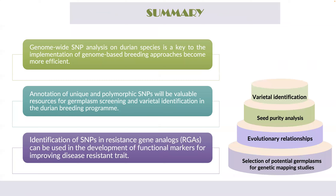As a summary, genome-wide SNP analysis on durian species is key to implementing genome-based breeding approaches more efficiently. The SNP information can be used in several applications, including varietal identification, seed purity, evolutionary relationships, and selection of potential germplasm for genetic mapping studies. Unique and polymorphic SNPs will be valuable resources for germplasm screening and varietal identification in durian breeding programs, while SNPs in RTAs can support development of functional markers for improving disease-resistant traits.